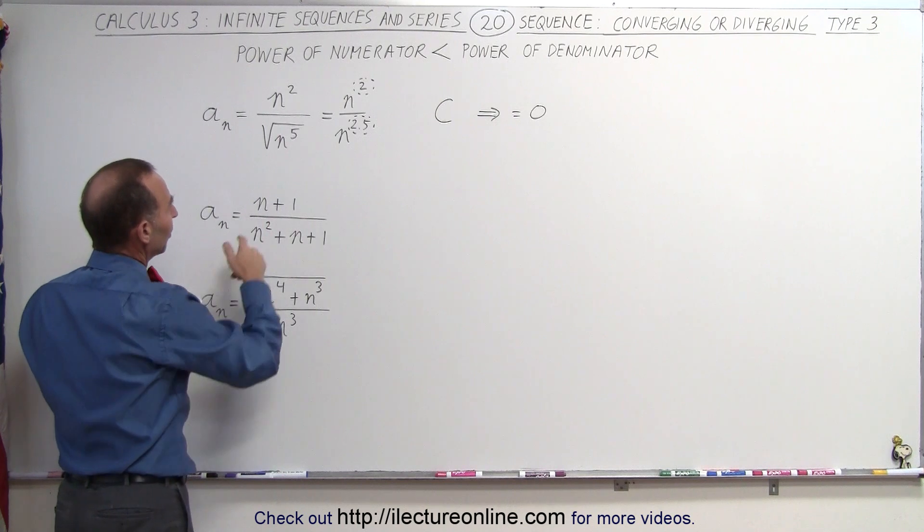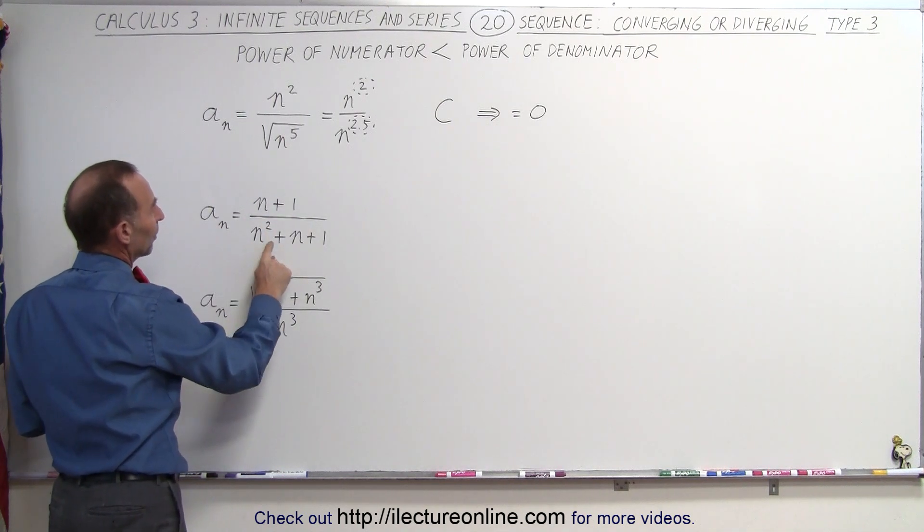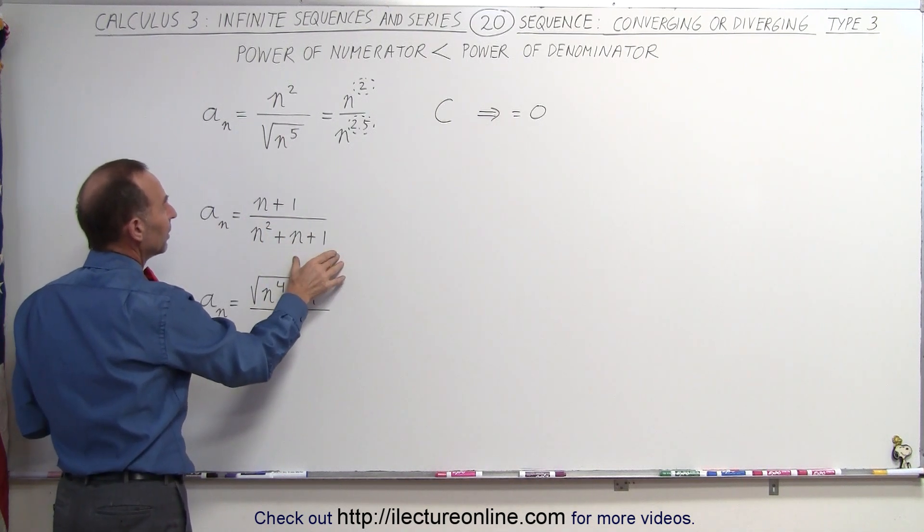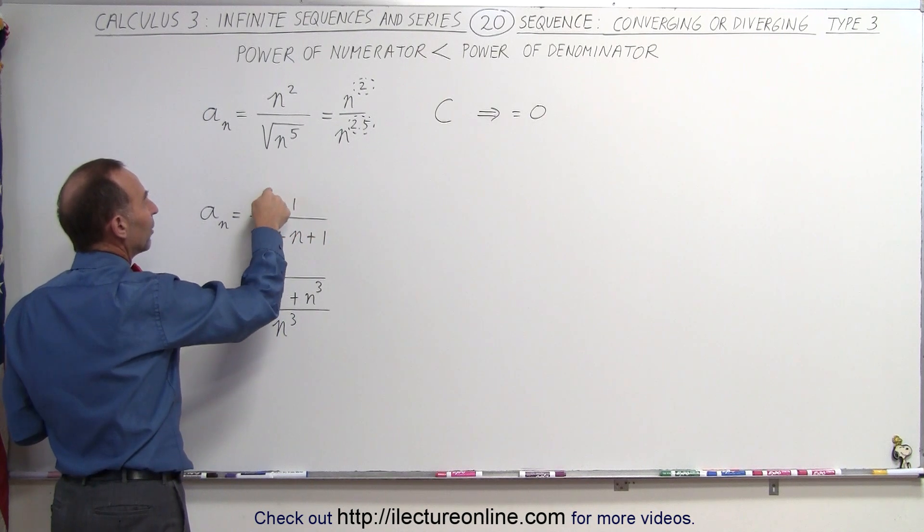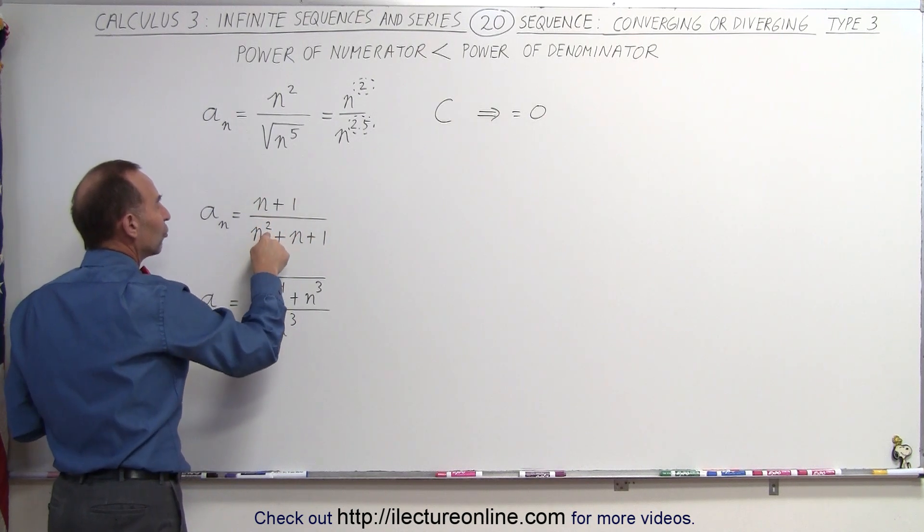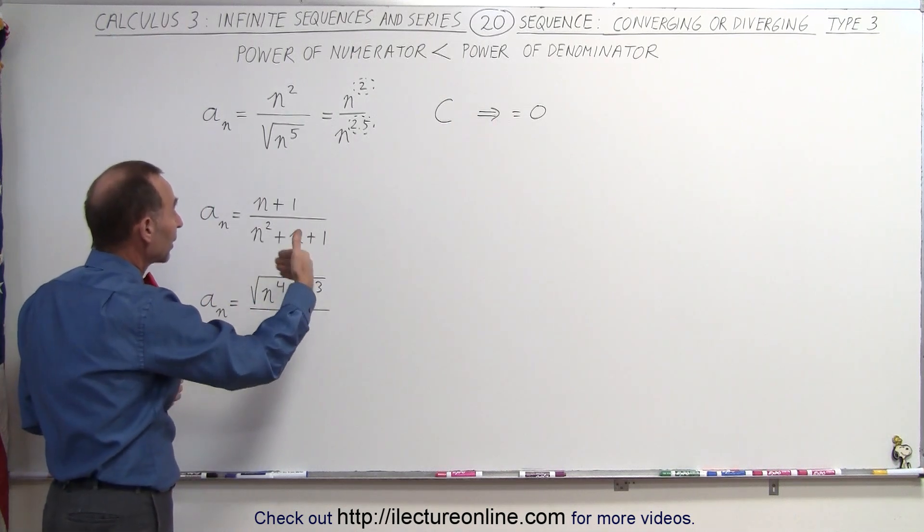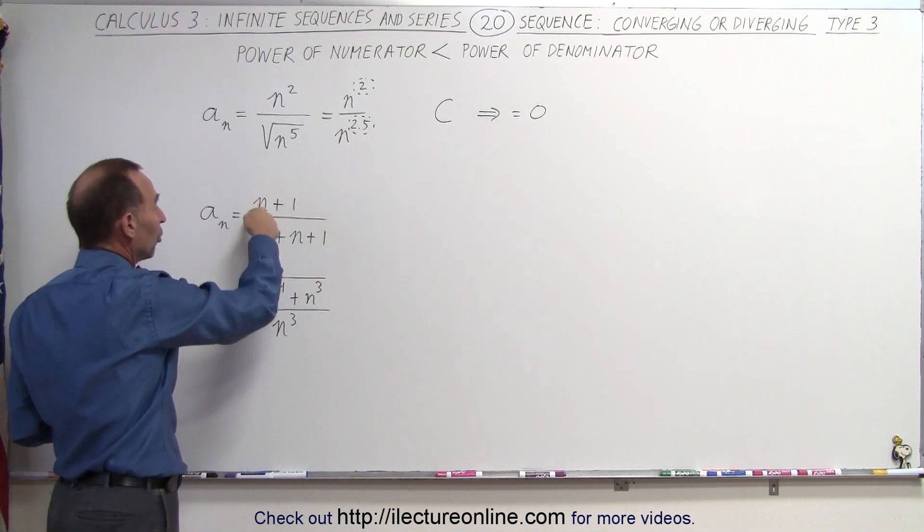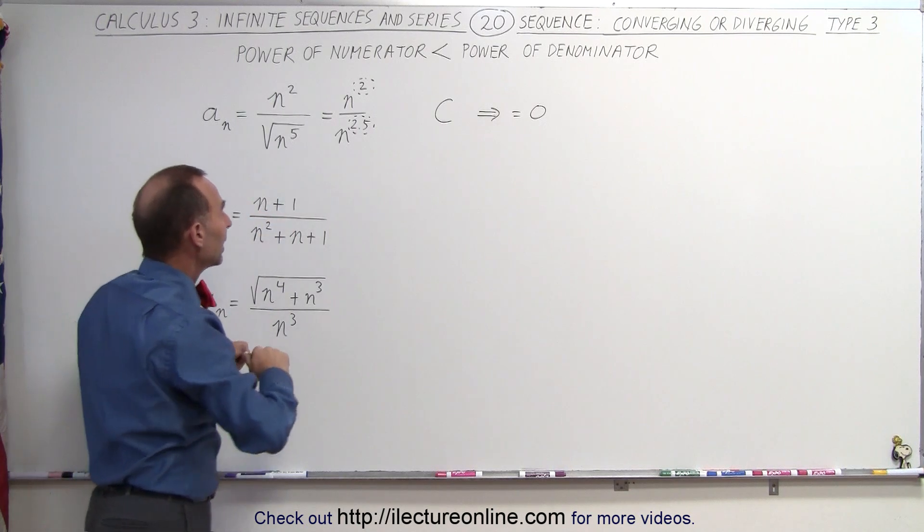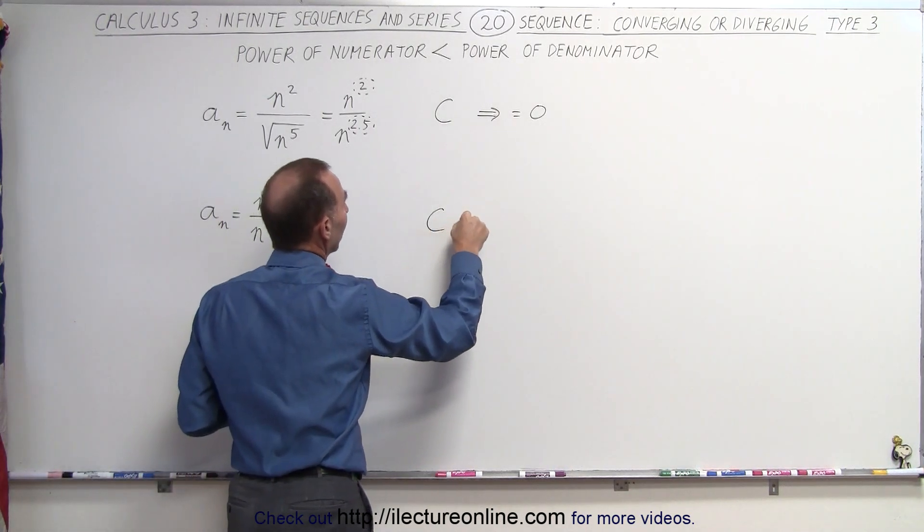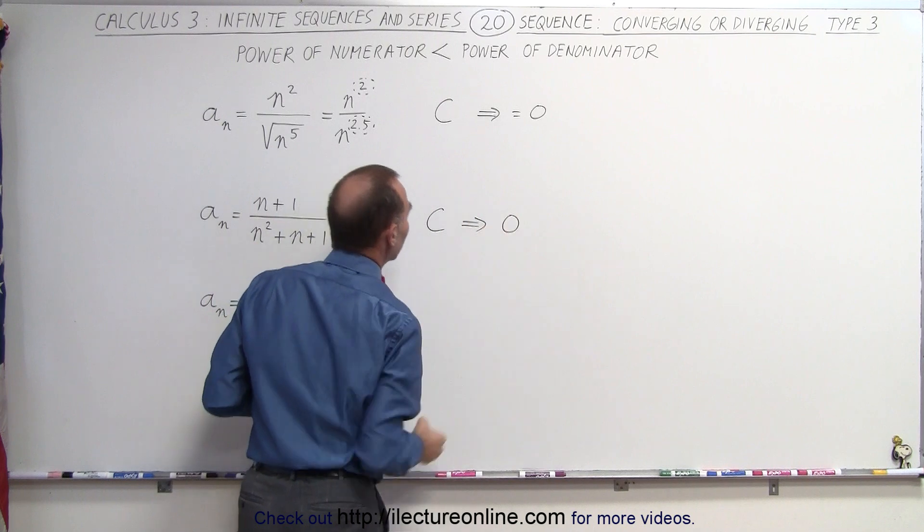Same over here, we have n plus 1 in the numerator, n squared plus n plus 1 in the denominator. And again, notice that n to the first power in the numerator, n squared in the denominator, we can ignore the n plus 1 over here. As n gets bigger and bigger, this will grow much slower than the denominator. So again, the sequence will converge, and in the limit, it will become equal to zero.